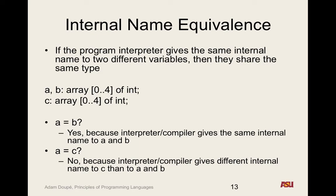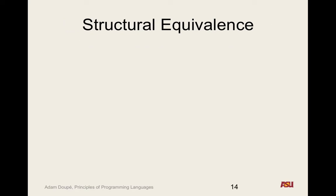We can relax this even further with structural equivalence — instead of just looking at type names, we look at the structure of the types. If the structures are the same, they're the same type. We have five rules to decide structural equivalence. Rule one: the same built-in types are equivalent — int is structurally equivalent to int, float to float.